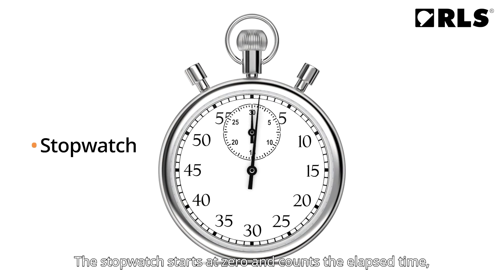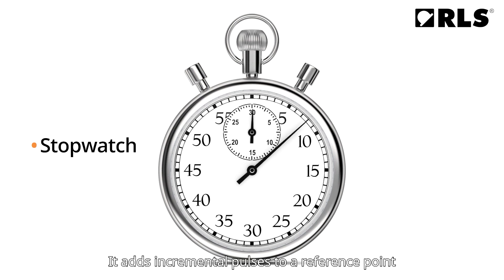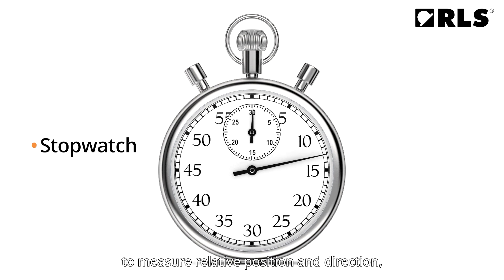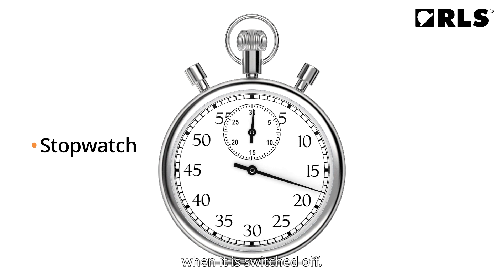The stopwatch starts at zero and counts the elapsed time, similar to how an incremental encoder works. It adds incremental pulses to a reference point to measure relative position and direction, but it does not retain this information when it is switched off.